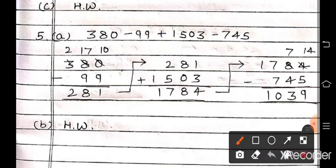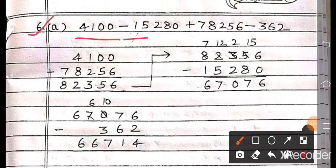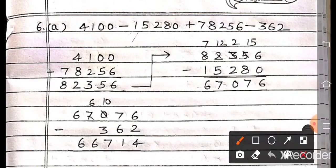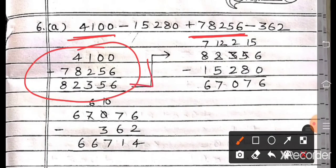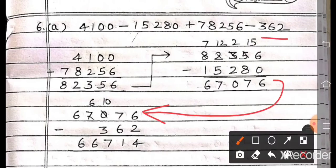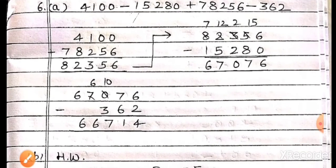So like this you have to do, and part B you have to do in your homework. Now question number 6, part A: 4,100 minus 15,280 plus 78,256 minus 362. This subtraction is not possible first because 4,100 is smaller. So first add 4,100 and 78,256. Write your answer here and then subtract 15,280. From that answer subtract the last number 362. Part B you have to do in your homework.